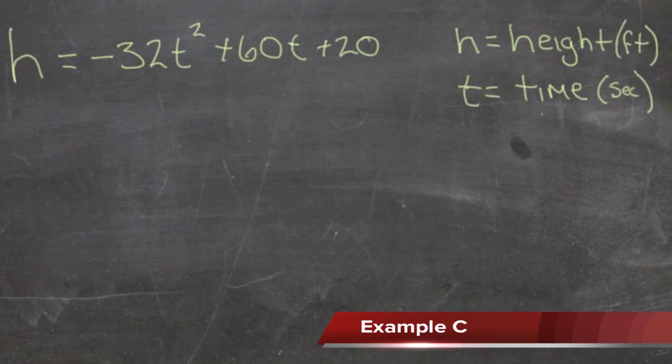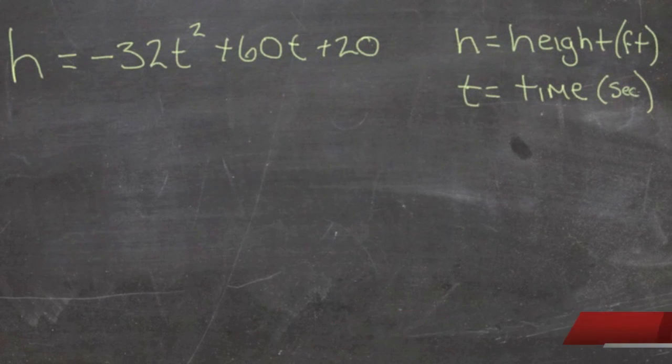The height of the object in feet is represented by h, and the time that the object is in the air is represented by t, and it's measured in seconds. What they want us to do is evaluate this expression given a value for t of 2 seconds.